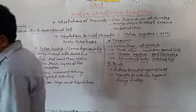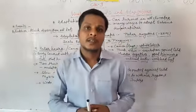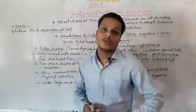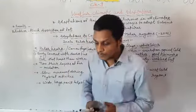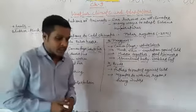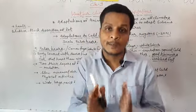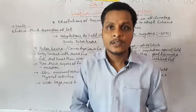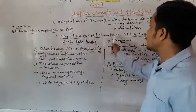The last thing is reducing physical activity. When we do physical activity, heat is lost from the body. So animals reduce their movement from one place to another — in other words, animals hibernate. These are the things about adaptation of animals to cold climates.